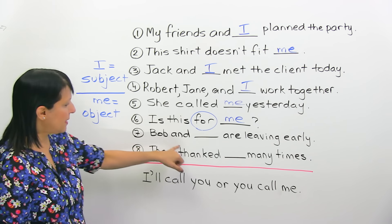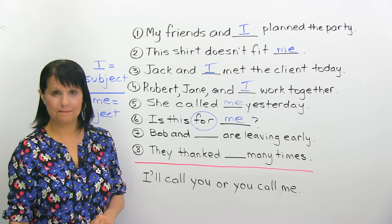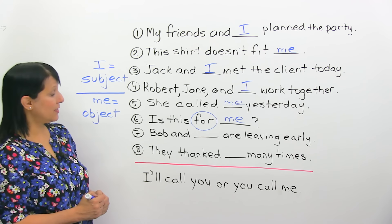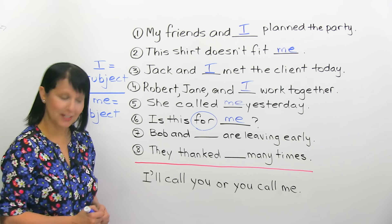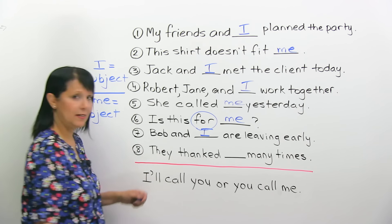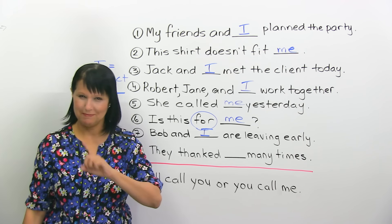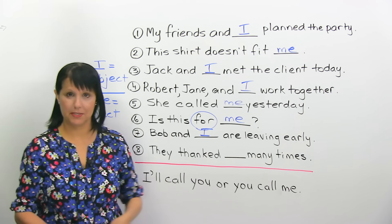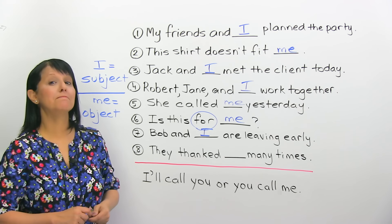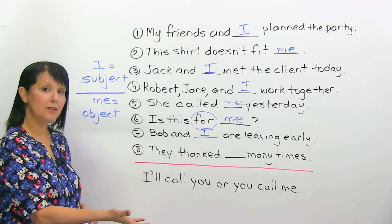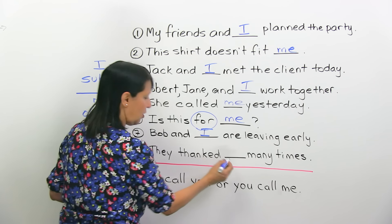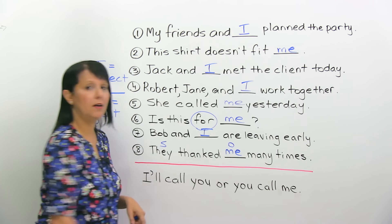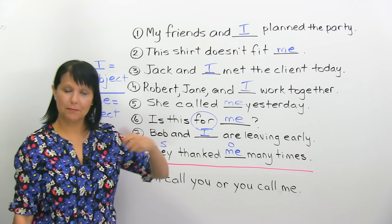Number seven: 'Bob and blank are leaving early' — I or me? Think about it — is it a subject? Is it an object? It's a subject, so we need to say I. Bob and I are leaving early. The last one: 'They thanked blank many times' — I or me? Is it a subject? Is it an object? It is an object, so we need to say me. They is the subject here, me is the object. They thanked me many times.